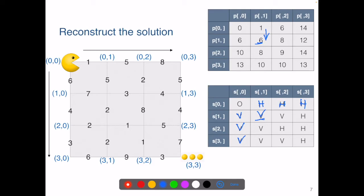Once both tables are filled, we can figure out an optimal path getting to the final destination, location (3,3), by tracing back in table S.